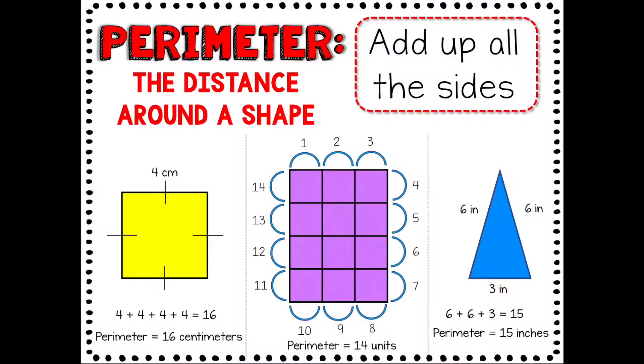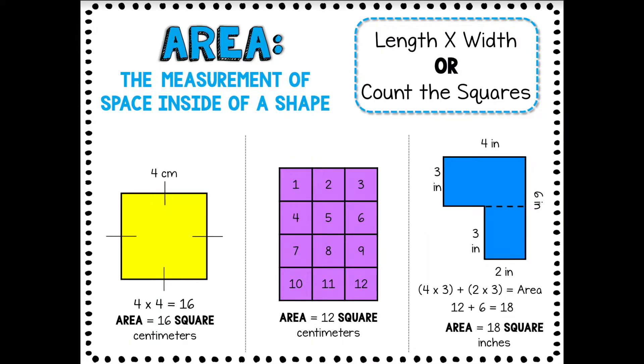Okay, so again, to review, when we think of perimeter, we think of plus to add up all the sides. Now the perimeter is the distance around a shape, but the area is the amount of space inside of a shape.